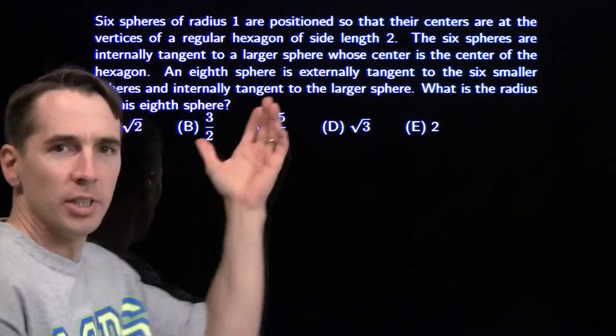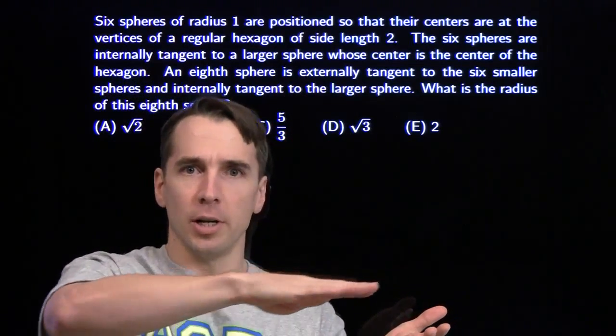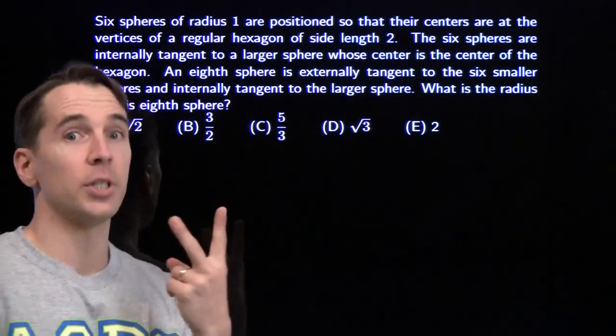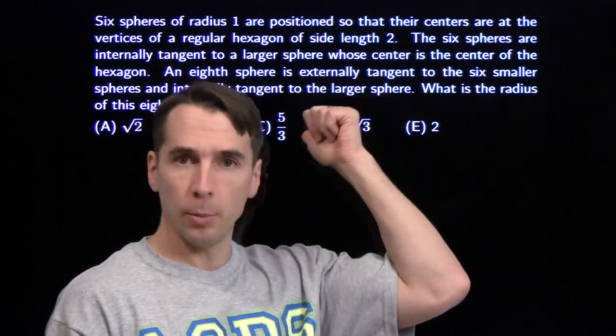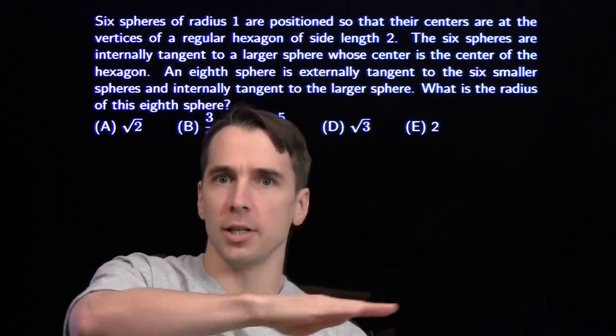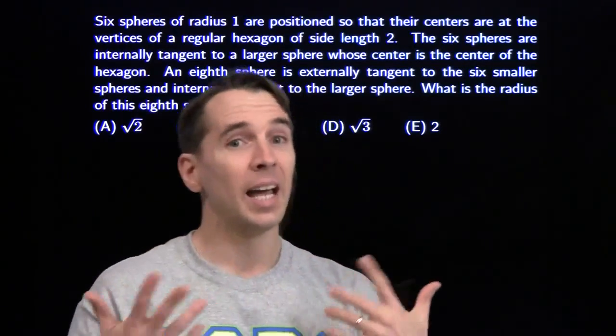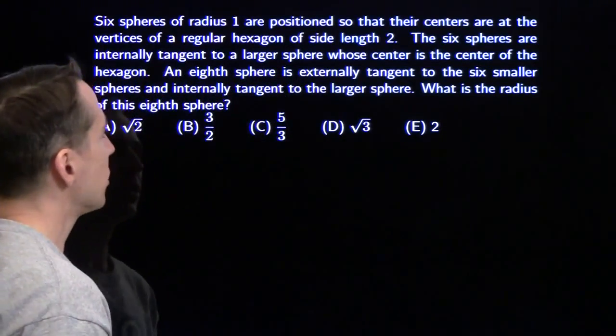Now, one thing I like to do with these 3D problems is I like to take 2D cross sections, turn 3D problems into 2D problems. And when I have a problem with a whole bunch of spheres, I like to throw my cross sections through centers of those spheres and through points of tangency whenever I have tangent spheres.